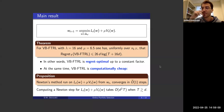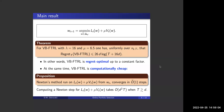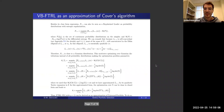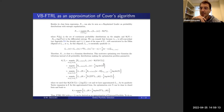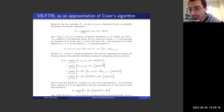The regret result: with λ = 16 and μ = 6.5, VB-FTRL achieves regret O(d log T), which is optimal — matching Cover's algorithm in regret while being dramatically cheaper computationally. This solves the open problem: regret-optimal and computationally feasible, with runtime O(d^2 T) per round.